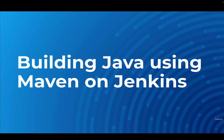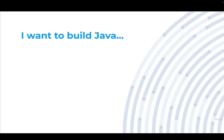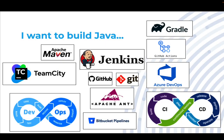Building Java using Maven on Jenkins. It starts with a need: I want to build Java. But when you make that statement, it inevitably leads to a question — how do I go about building Java?